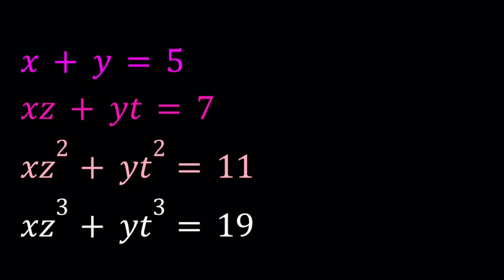So anyways, we have this system. x plus y is equal to 5, xz plus yt is equal to 7. So there are four variables: x, y, z, t. And then we have the quadratics and the cubics. So we're going to solve for x, y, z, and t if possible. Let's see how we can handle this problem.